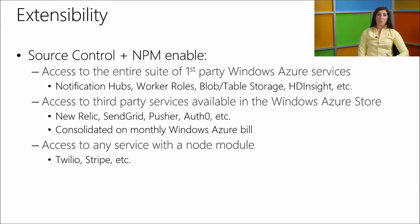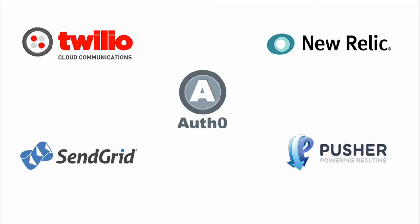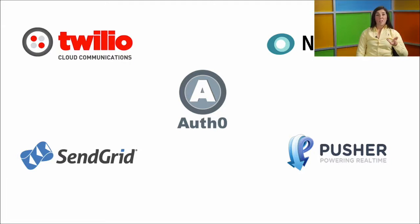Any node module that exists — the thousands out there — you can just npm install it using source control via Git, and you're off and running. If you put that in shared scripts, you can share methods across different scripts, for example using the same one in scheduled scripts and in an insert operation on a SQL table. Twilio expands the feature set to add SMS and voice. New Relic provides developer analytics and performance monitoring for iOS and Android. Pusher powers real-time communications. SendGrid handles email. Auth0 handles authentication providers including custom identity systems.